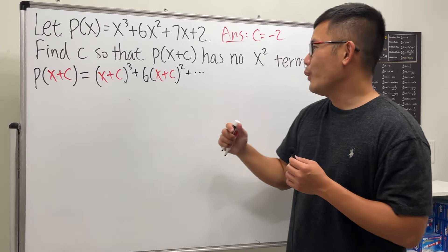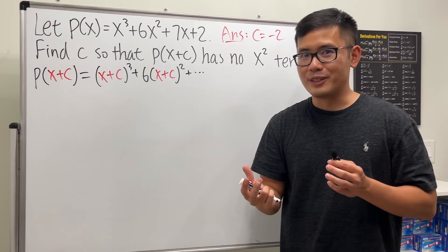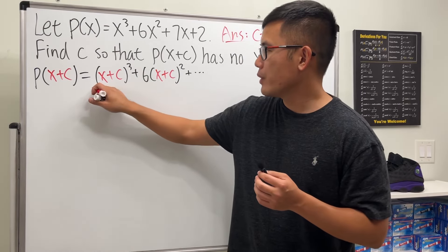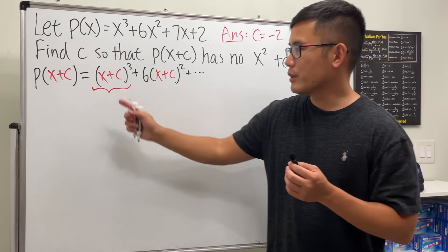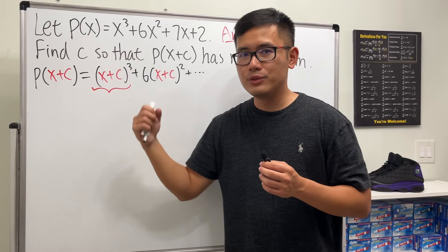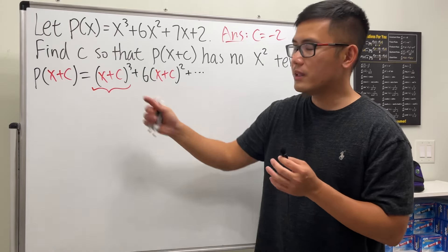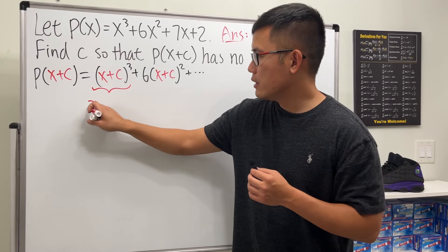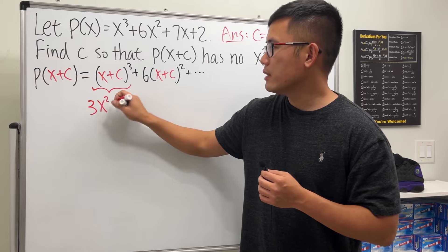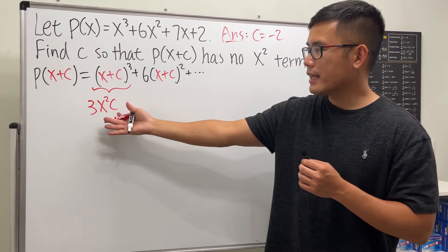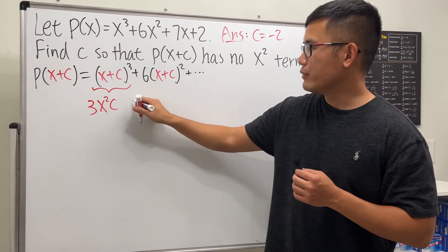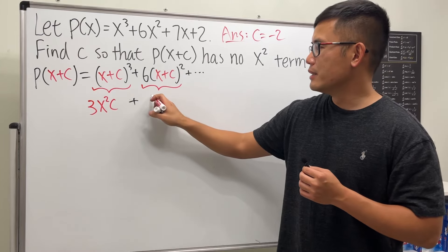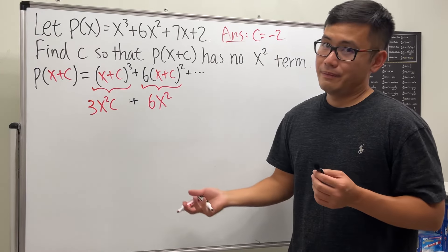This is only going to give us x² term if we use Pascal's triangle. We know the coefficients are 1, 3, 3, 1, and the second term from here gives us the x² term with coefficient 3: 3cx². Next we have to add the x² term from here, which is of course 6x².